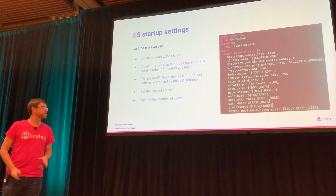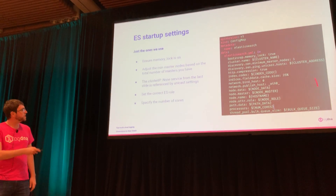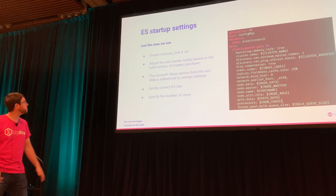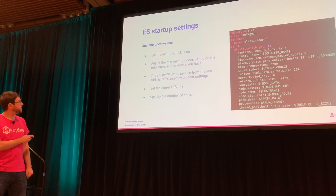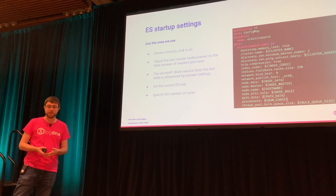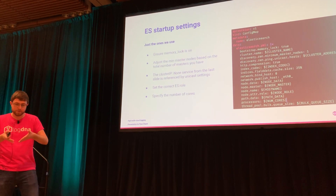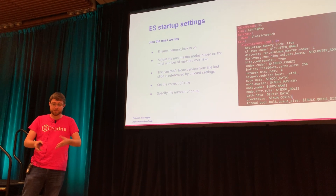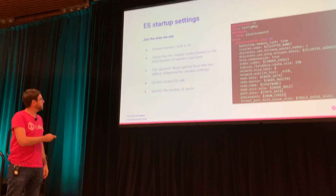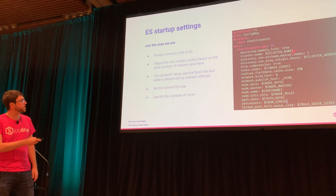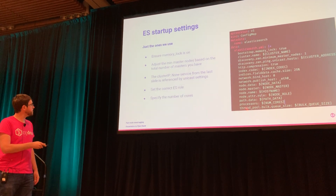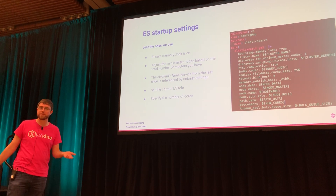Startup settings: there are a number of settings we use, but a few to highlight. Ensure memory lock is on — important when consuming large amounts of memory. Adjust the minimum master nodes based on the number of masters you have — this is the number that determines the minimum nodes required to form a functioning cluster, since Elasticsearch masters hold an election. Make sure the address of the cluster IP none service is set here so nodes can discover each other. And of course, set the correct ES role and the number of cores the JVM will use.